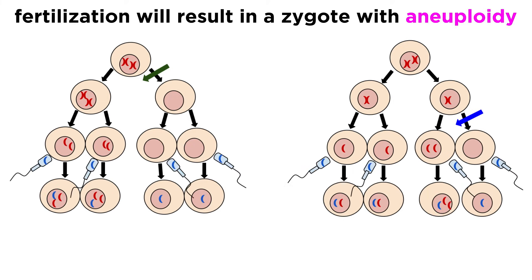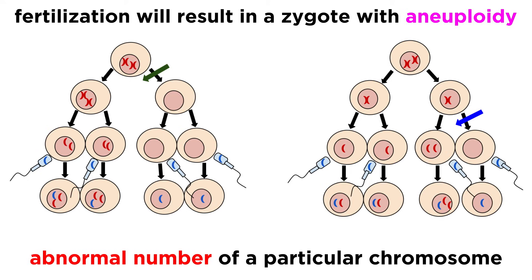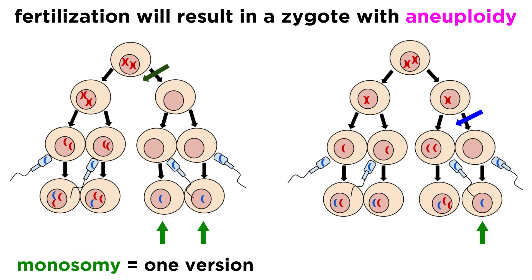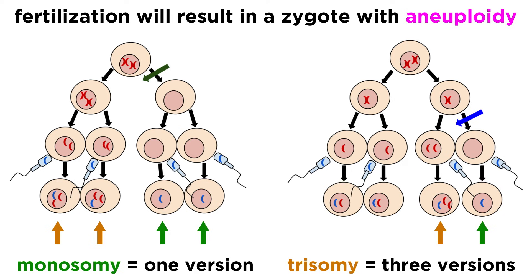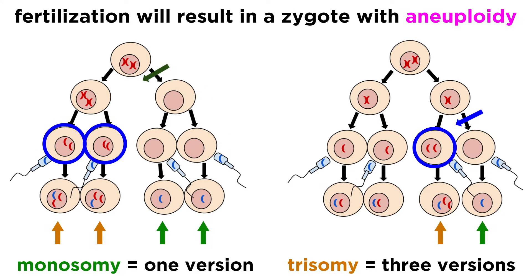If any of these abnormal gametes undergo fertilization with a normal gamete, it will produce a zygote that exhibits aneuploidy, which means an abnormal number of a particular chromosome. Typically, this will be either monosomy, meaning only one version of a chromosome, or trisomy, meaning three versions of a chromosome. This is because the abnormal gamete had either zero versions or two versions of a particular chromosome, plus the one from the normal gamete to give either one or three.